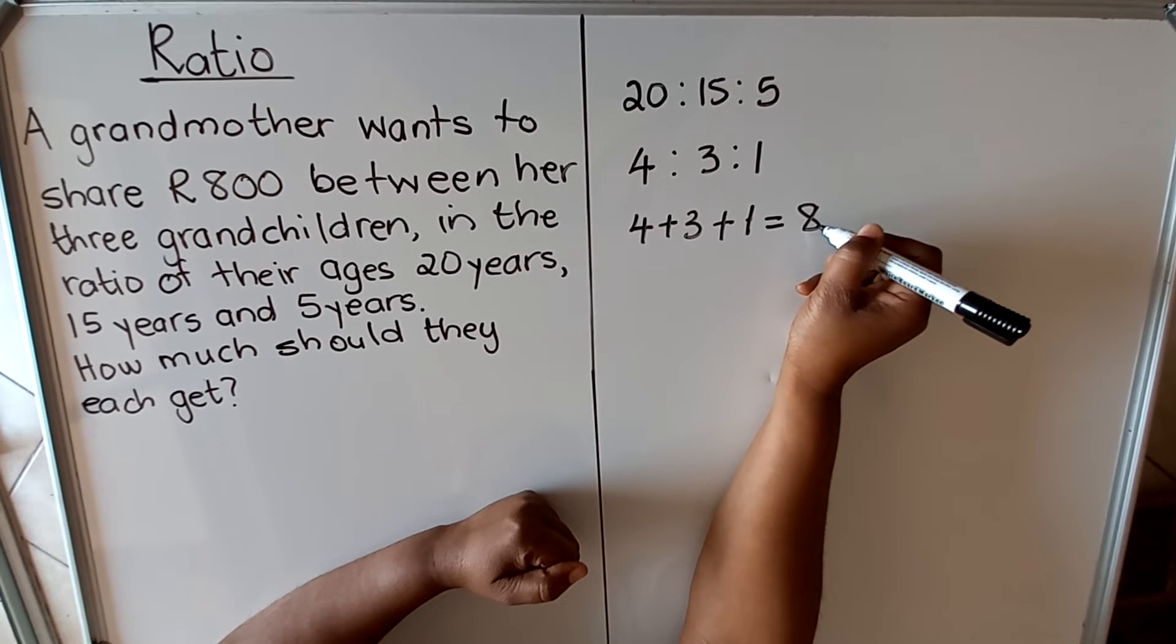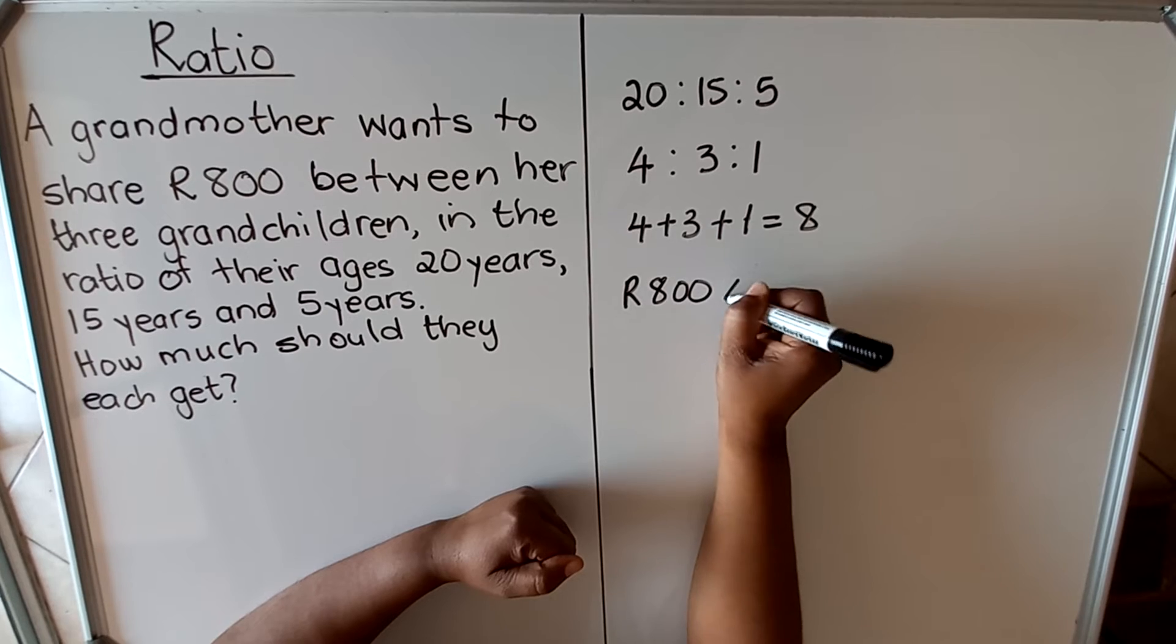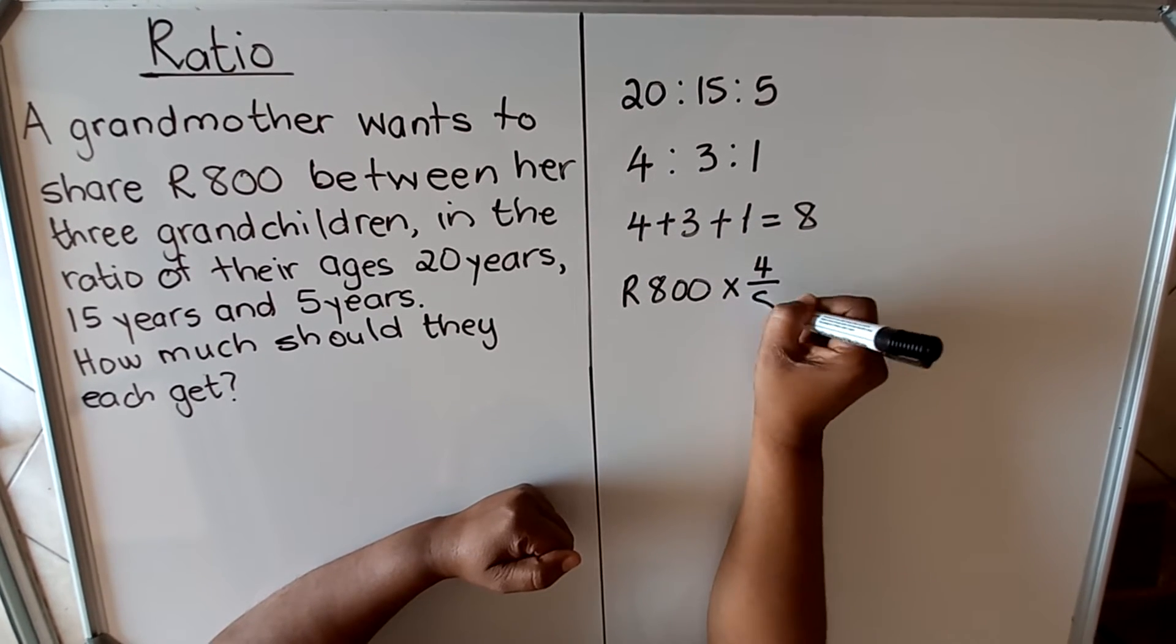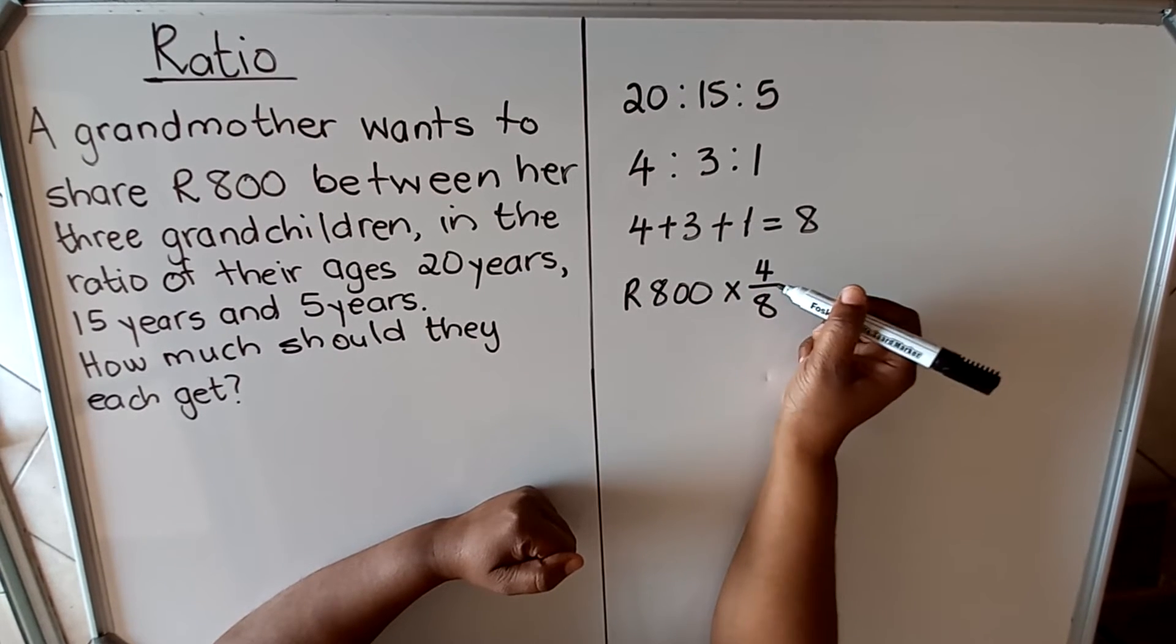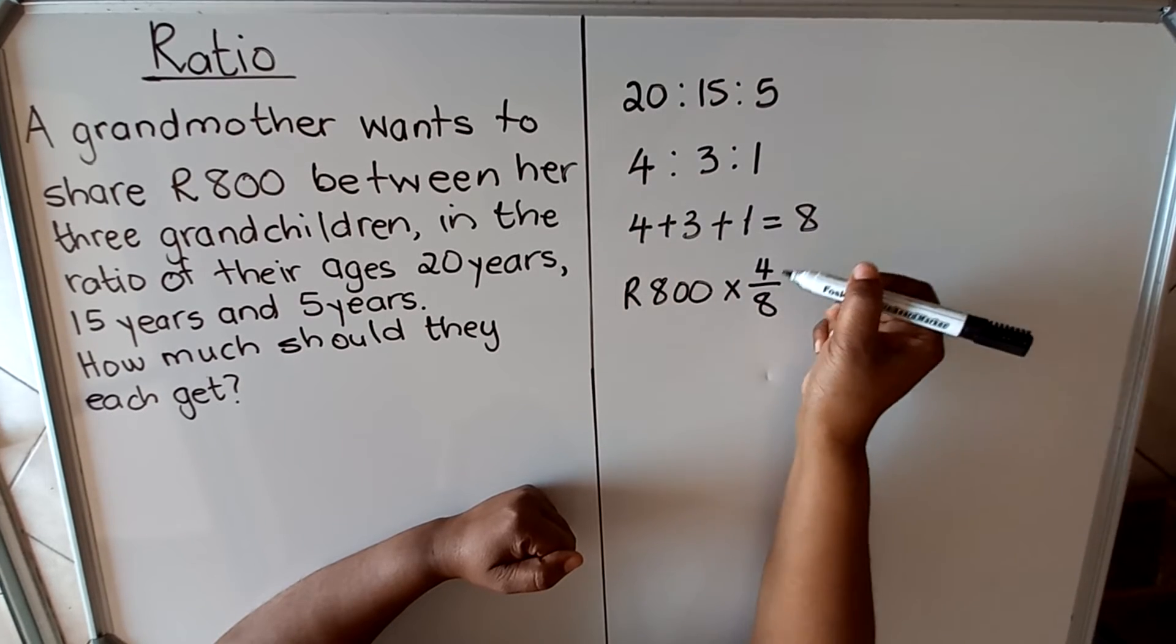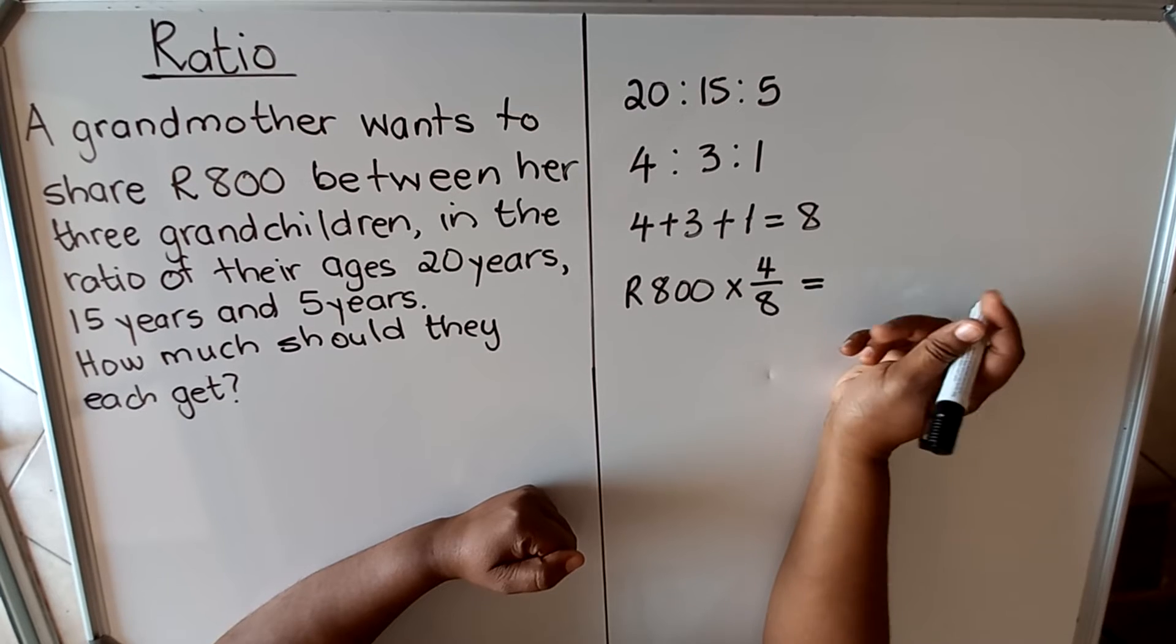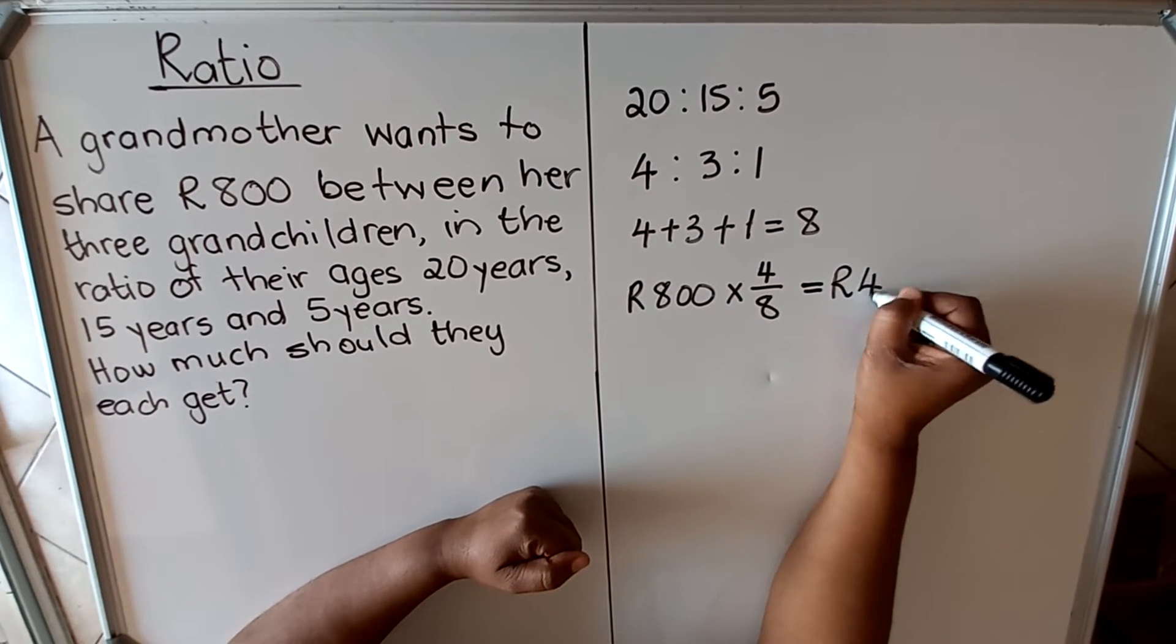You want to use this 8 to get there. The first one is 800, then times 4 divided by 8. So this one will get 4/8 of the whole amount. You'll get the 4 from the simplified ratio divided by 8. The 8 is the total of all the ratios. And then you take your calculator, you get that this first child gets 400.